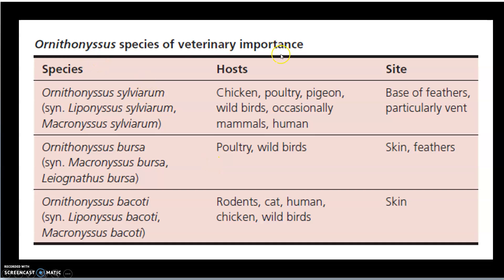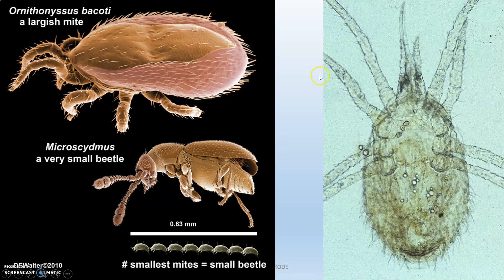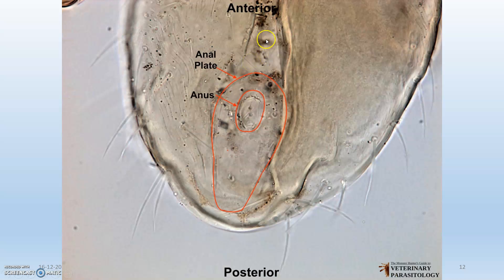Moving to the species: Ornithonyssus sylviarum attacks chicken, poultry, pigeon, wild birds, etc. Ornithonyssus bursa acts on poultry and wild birds. This is the adult female Ornithonyssus sylviarum. You can also see images of Ornithonyssus bacoti species — these are the Ornithonyssus species.